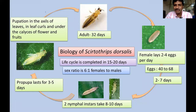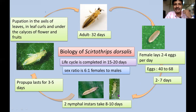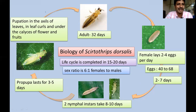Regarding the biology of Scirtothrips dorsalis: it lives for about 32 days; eggs are inserted into leaf tissues. Females lay about 2 to 4 eggs per day, totaling 40 to 68 eggs, which hatch in 2 to 7 days depending on temperature. There are two nymphal instars (also called larval instars) since there is no non-feeding pupal stage in Thysanoptera. These larvae live for about 8 to 10 days.